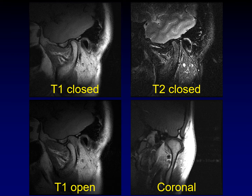Here are the four critical MR sequences used when evaluating the temporomandibular joint. With the patient's mouth closed, we do sagittal oblique T1 and T2 weighted images as well as a coronal oblique T1 weighted image. Then we have the patient maximally open their mouth — as wide as is comfortable — place a small block to keep it there, and image with T1 weighting in the open mouth position.